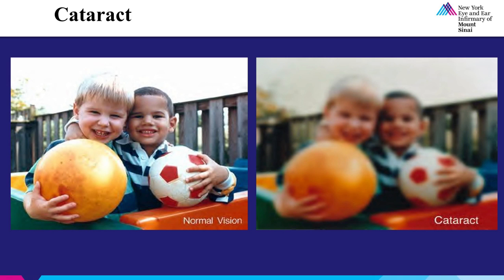In this image, we see on the left what a person with normal vision would see. On the right is an example of what a person with a cataract may see. The entire image is blurred and colors may appear not as bright or muted.